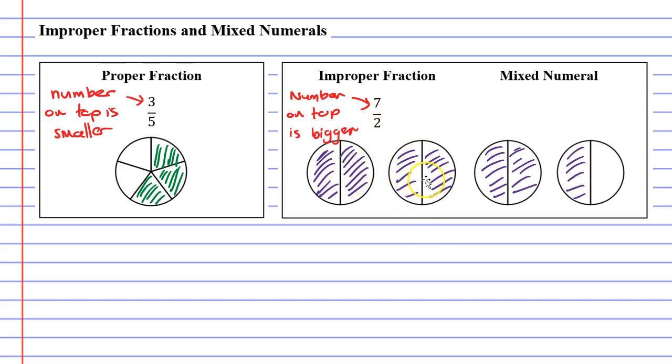I needed four circles in order to draw the improper fraction 7 over 2.